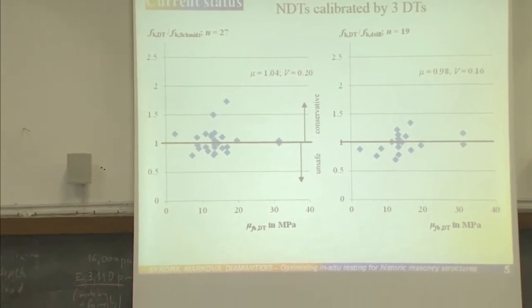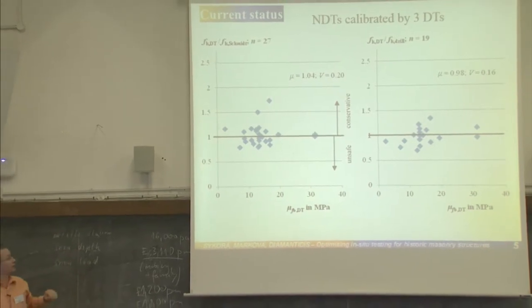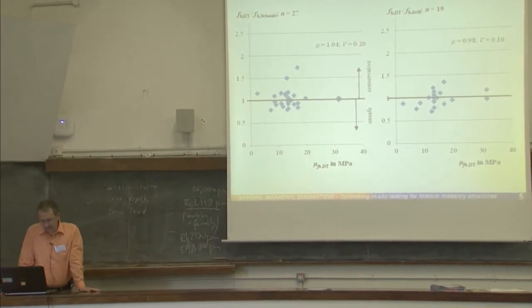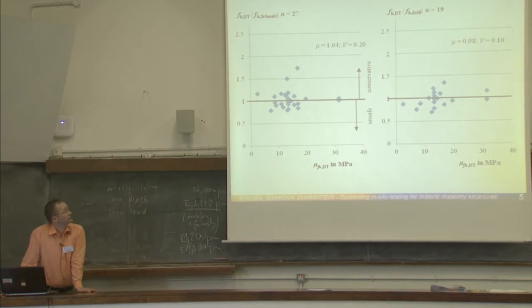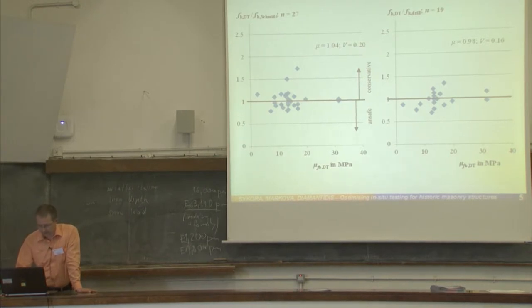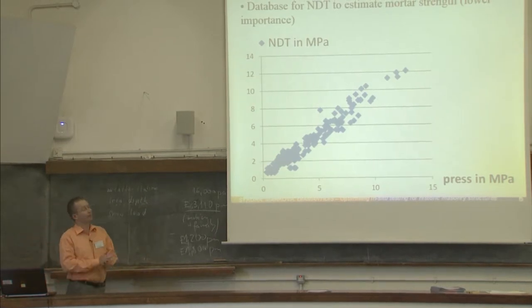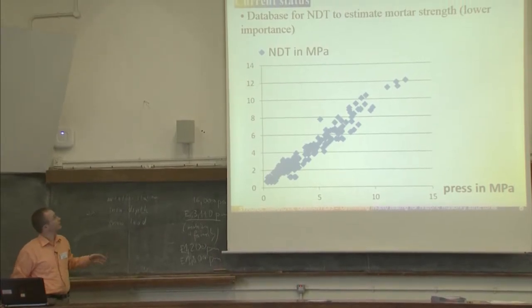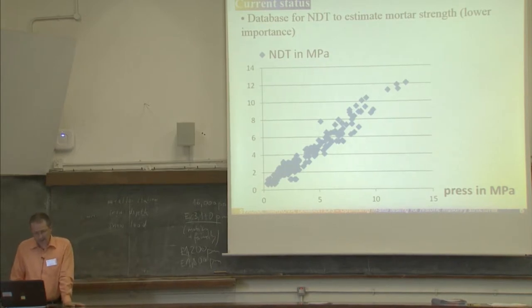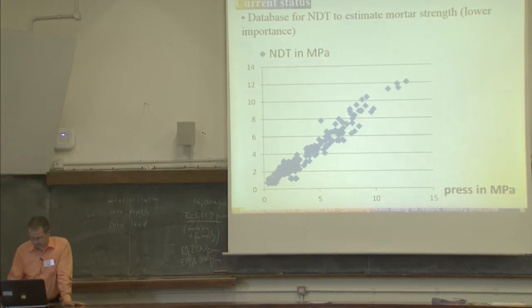For instance, if we apply three destructive tests on the basis of which we calibrate non-destructive technique, we of course remove nearly perfectly the bias. All these data are just taken from the real cases, so there is no simulation. We see that the bias is more or less removed, but we still have some scatter in test uncertainty which can be expressed by coefficient of variation of about 20 percent. This is just what we have in the database. We have a similar database for mortar.